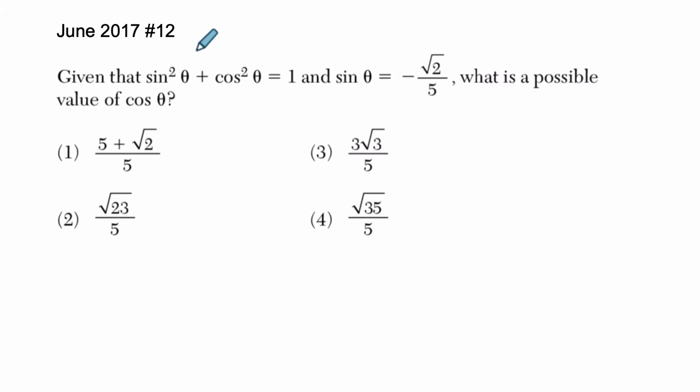So right here we use a classic Pythagorean identity in trigonometry. It says the sine squared of theta plus the cosine squared of theta is 1.